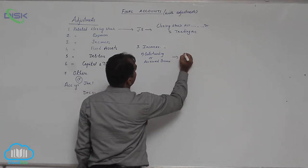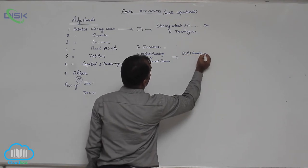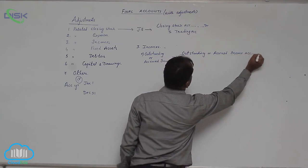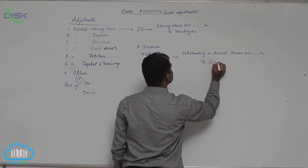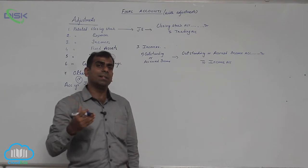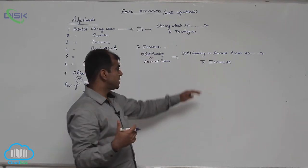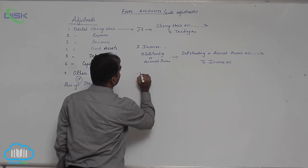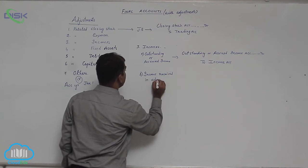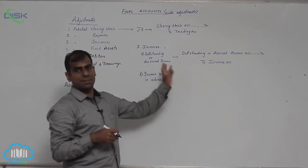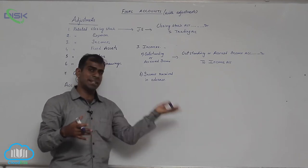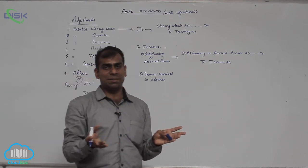The journal entry would be: outstanding or accrued income account debit, and the concerned income account credit — it could be rent received, interest received, commission received, or any other income we should receive but did not. The next adjustment is income received in advance. When income is received in advance, some portion of next accounting year's income has already been received in this year and credited as income, so that portion has to be removed from this year's income.